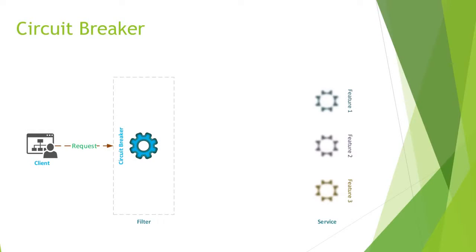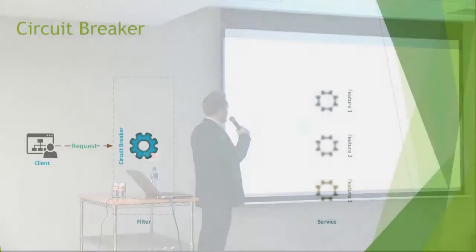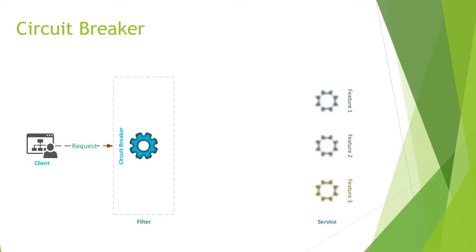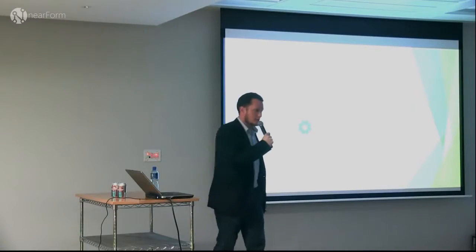Circuit breaker — the next quintessential pattern in terms of microservices. We have a client that initiates a request, and rather than go directly to our microservice, we have a filtering layer and a circuit breaker in the middle. The circuit breaker effectively counts requests that come in.